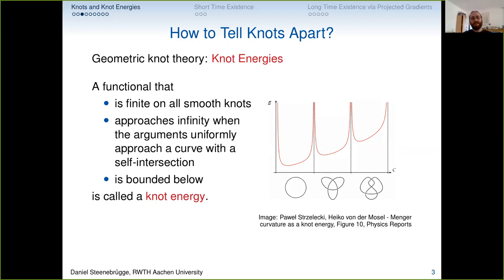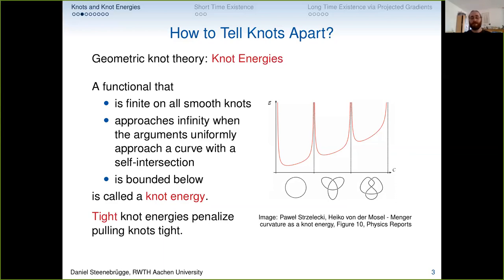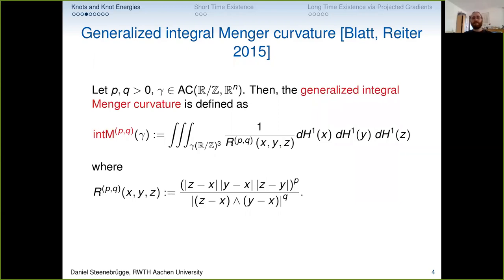We also want our energy to be bounded below, which is nice for calculus of variations. Do knot energies prevent pulled-tight knots? They do not in general, sadly. So we have another condition called tight knot energies: tight knot energies penalize pulling knots tight, so we can't pull a knot tight with finite energy anymore.